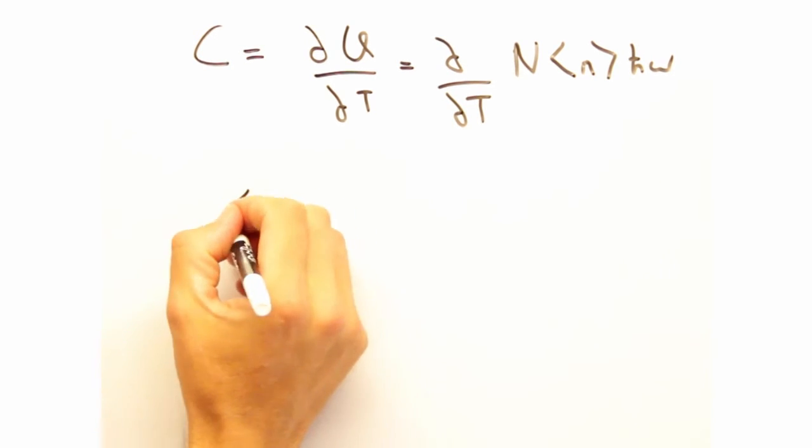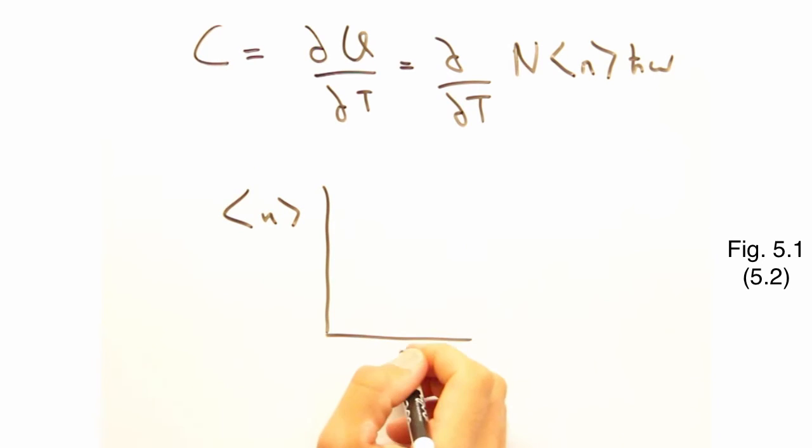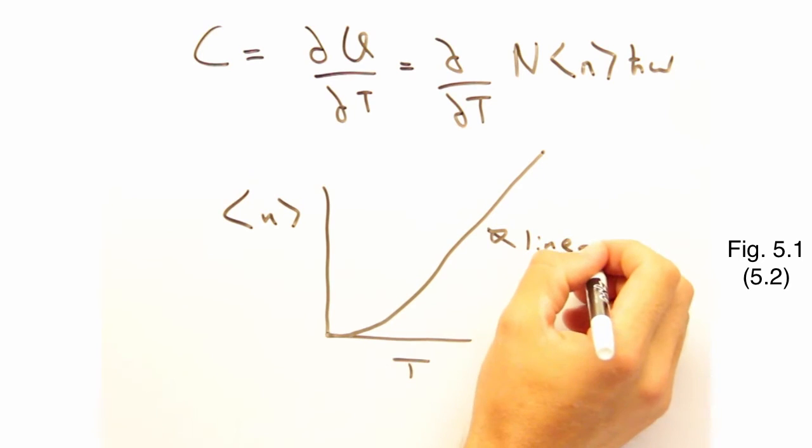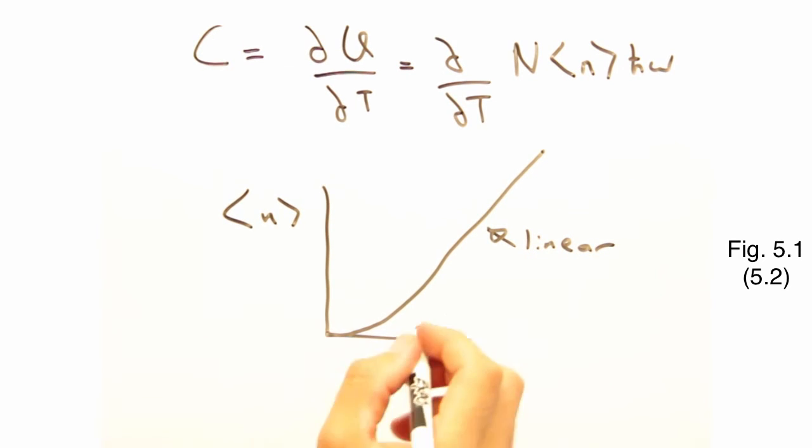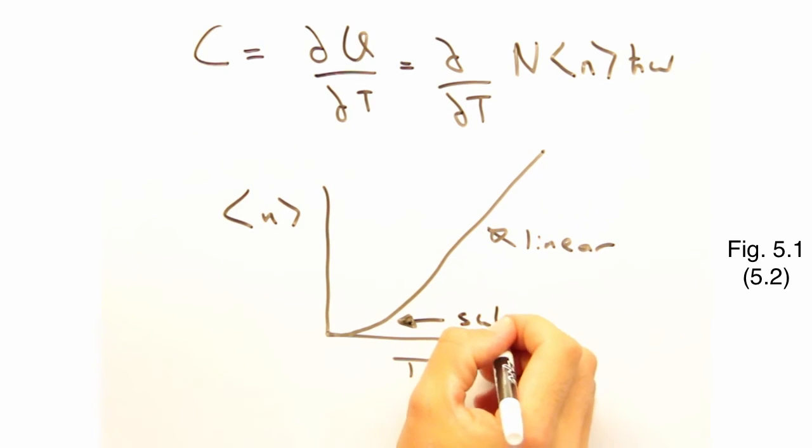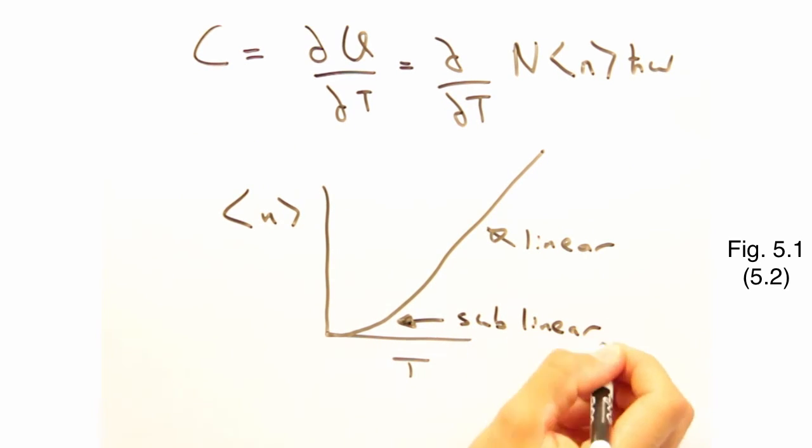To really see this, I'll plot n versus T for a frequency of, say, 10 terahertz. So the change in phonon population at the high temperature region is linear, but sublinear at low temperature. Right, and since n is the only thing that changes with temperature in our energy equation, its temperature dependence is reflected in the heat capacity.